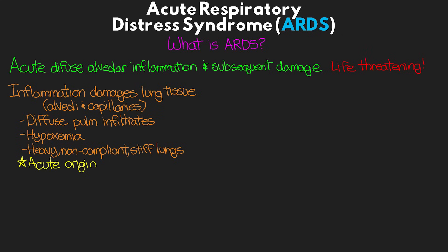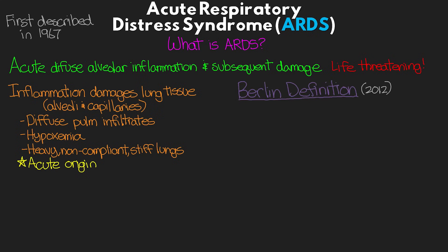One of the hallmarks of ARDS is that it is acute in origin, being 7 days or less from the initial insult. Typically it presents within hours or a few days, but anything within 7 days is our classification as being acute. ARDS was first described in 1967, and the most common definition we use today is the Berlin definition, devised in 2012 by the European Society of Intensive Care Medicine, later adopted by the American Thoracic Society and the Society of Critical Care Medicine.